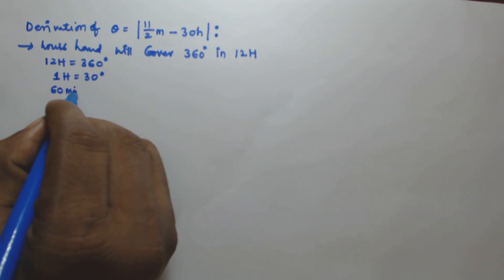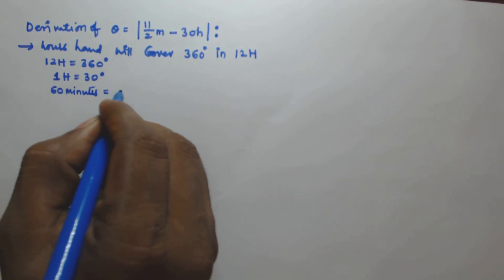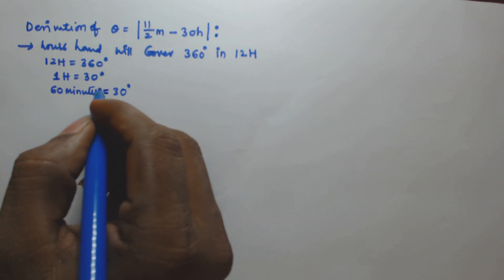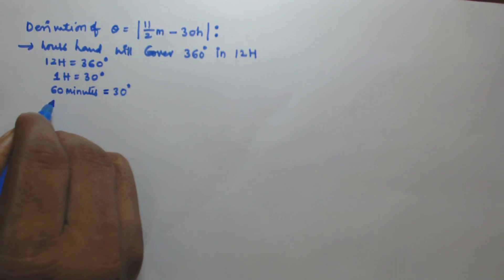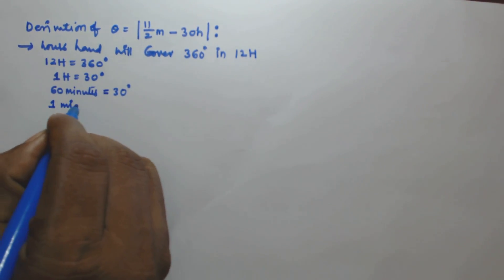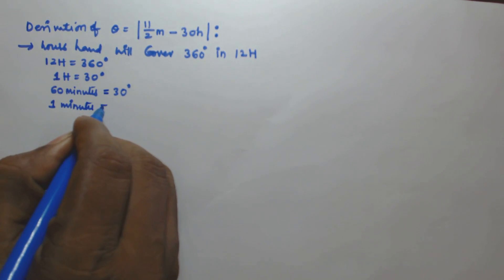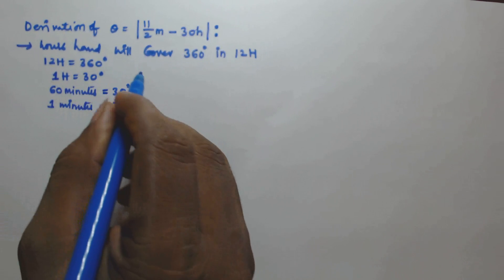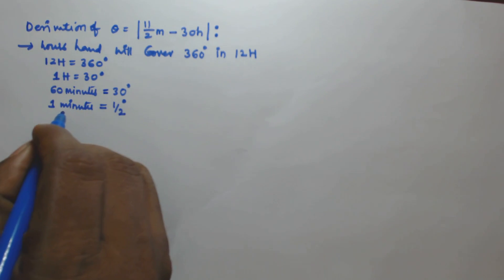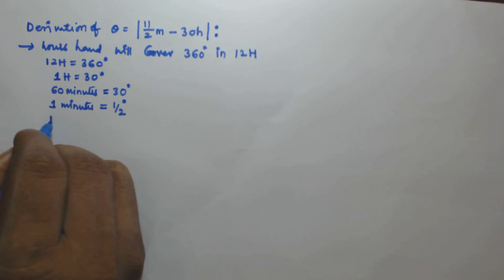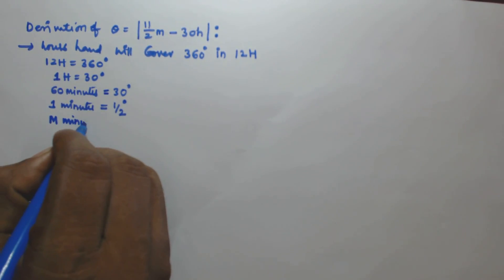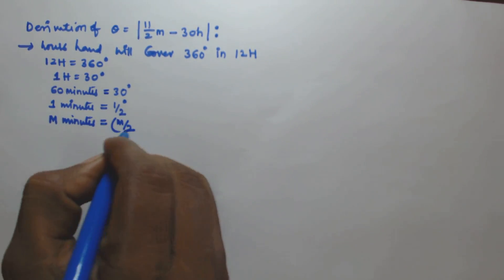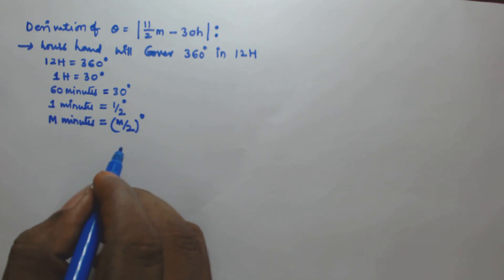One hour can be written as 60 minutes. So 60 minutes = 30 degrees. If 60 minutes = 30 degrees, then one minute is equal to 1/2 degree. That means the hours hand will cover 1/2 degree in one minute, so in m minutes the hours hand will cover m/2 degrees.